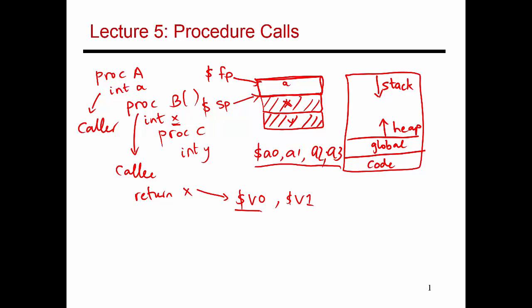How exactly is the procedure being invoked? This is done with a special instruction referred to as a jump and link. Procedure A is going to do jump and link and give a certain label — let's call it BSTART. Procedure B starts at a given address with label BSTART, and here are the instructions that correspond to procedure B. Procedure A does jump and link BSTART, which tells the hardware this is a procedure call — it's a transfer of control to BSTART.